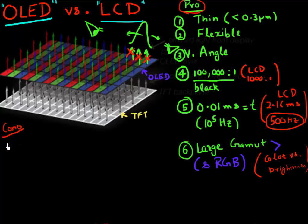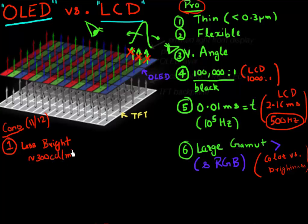Most of these are technological limitations, not fundamental limitations to OLEDs. But at the current status — speaking as of November 2012 — OLED-based displays tend to have lower brightness compared to LCD-based displays. Currently you can buy OLED-based displays with brightness of around 300 candelas per meter squared, whereas you can easily buy LCD-based displays with brightness of over 1,000 candelas per meter squared.